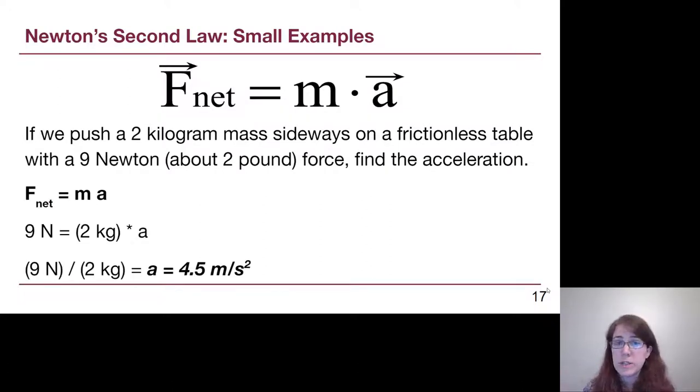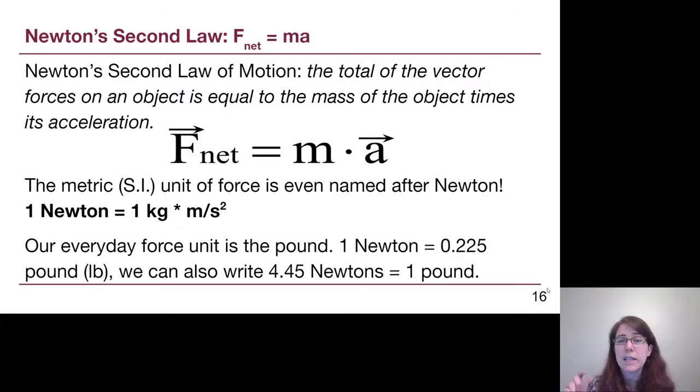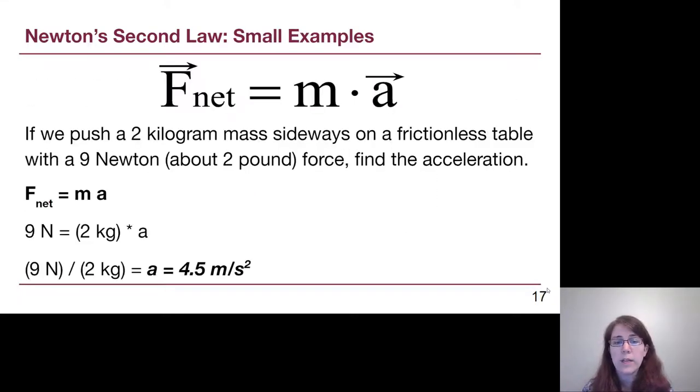So, our equations at the top of the slide. 9 newtons is the force, 2 kilograms is the mass, and so we have to solve for the unknown acceleration. We can divide both sides by 2 kilograms, and the acceleration will come out to be 4.5 meters per second squared. And again, if you're not quite sure where newtons per kilogram magically turns into meters per second squared, if we go back to the previous slide, it comes from the definition of what a newton actually is. So, we can continue to use the acceleration units that we've been used to, we just need to recognize that newtons kind of behind the scenes have that as part of the unit.